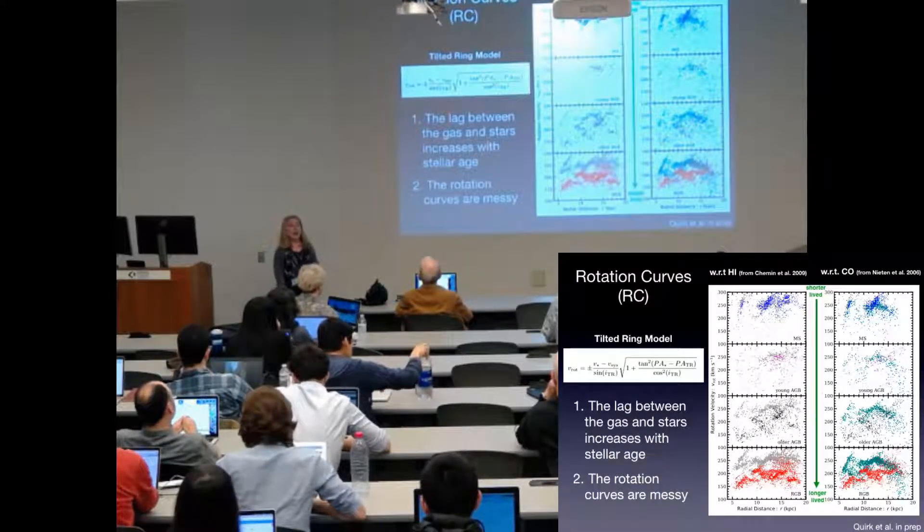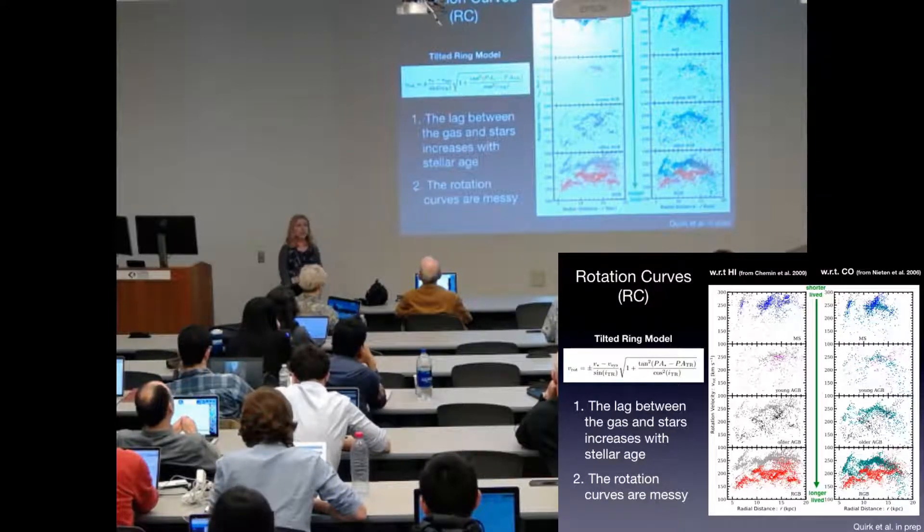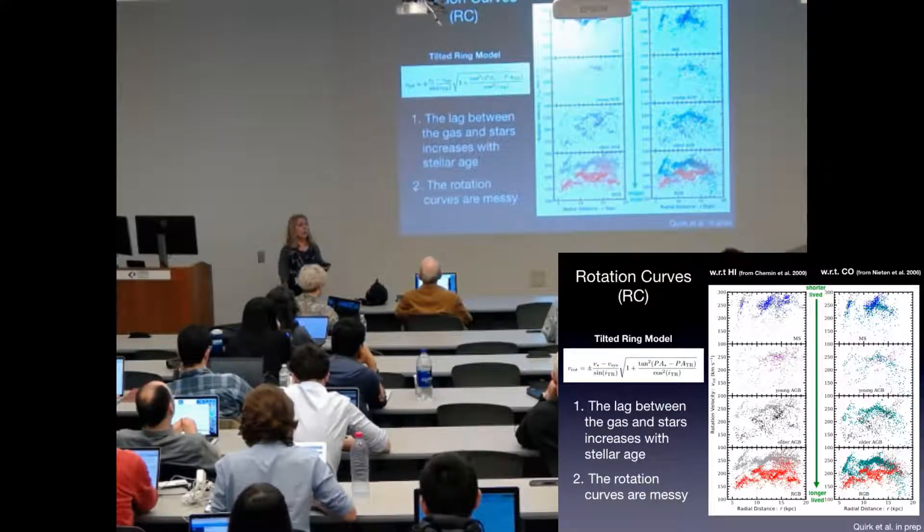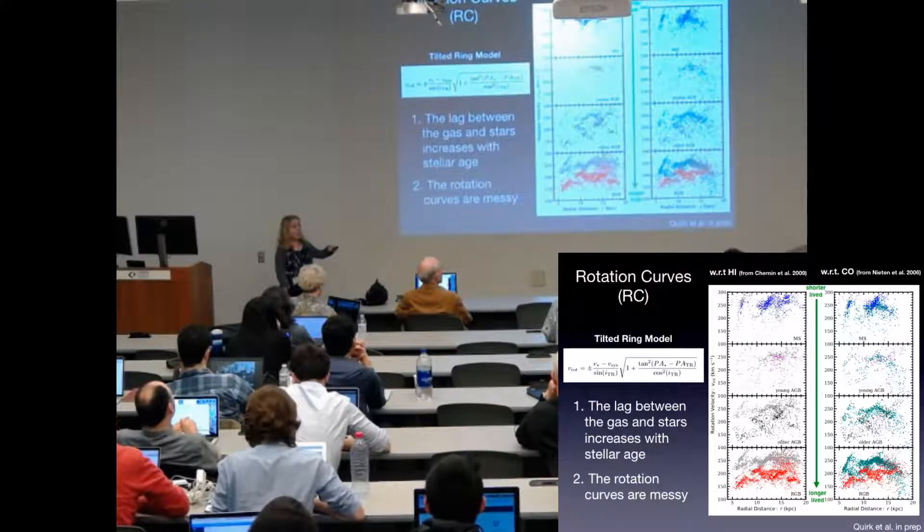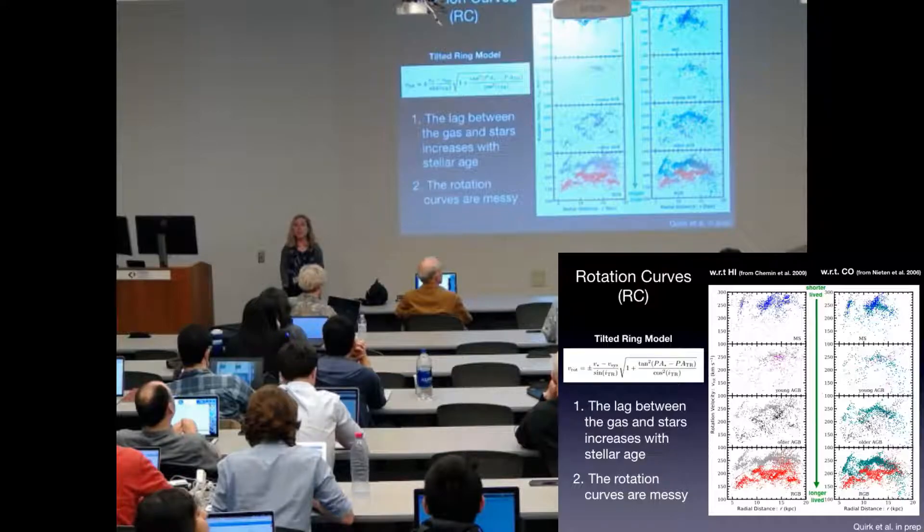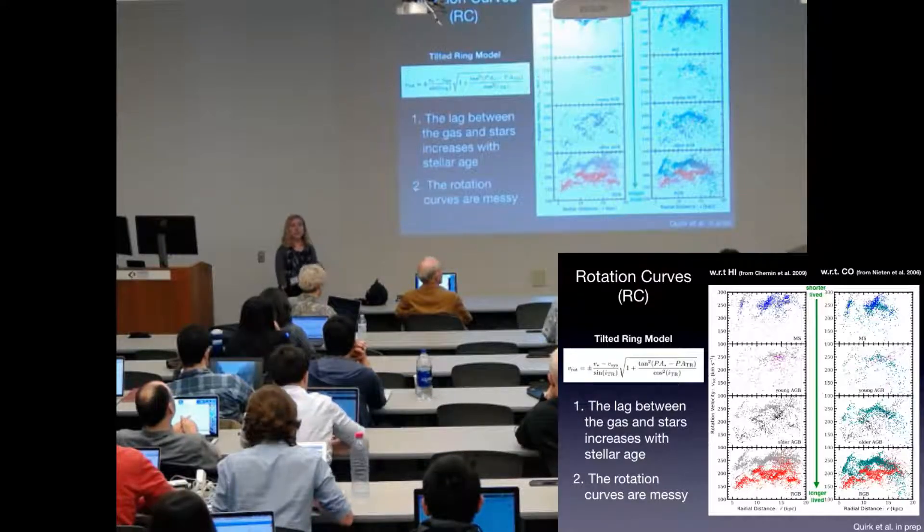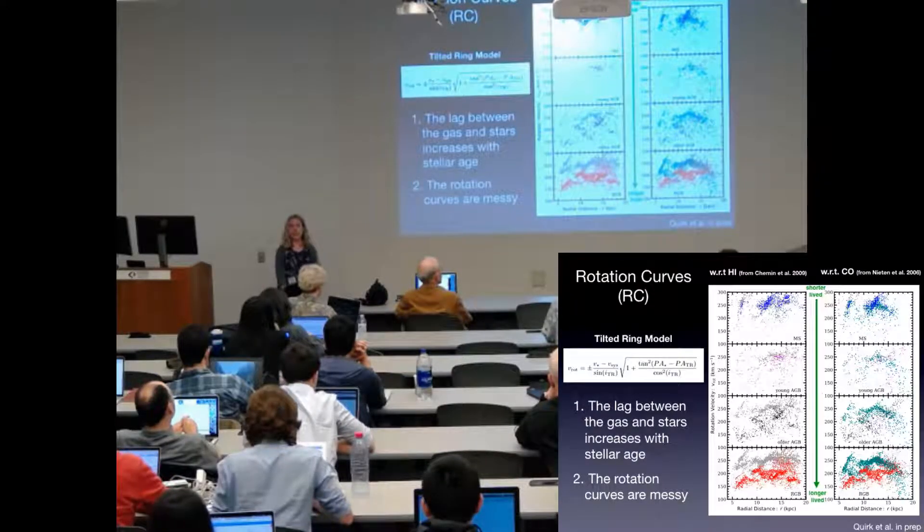One, the gap between the stellar rotation curve and the gas rotation curve, or the asymmetric drift, increases as you go from the shorter-lived populations to the longer-lived populations. And two, these rotation curves are rather messy. There's a lot of substructure and scatter that we see here.